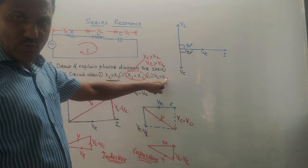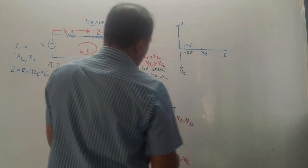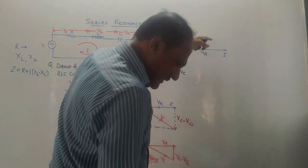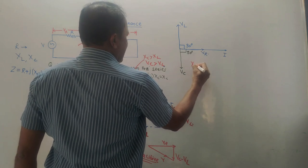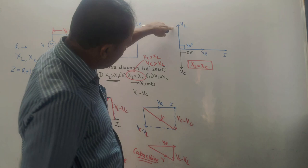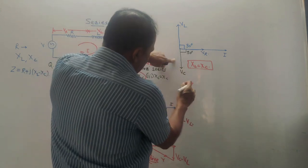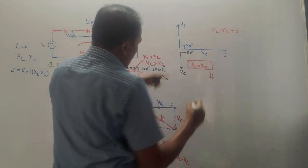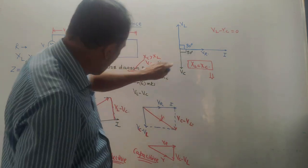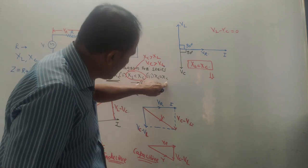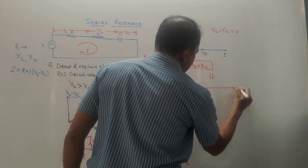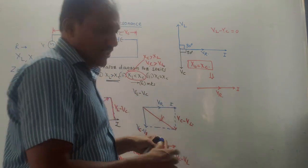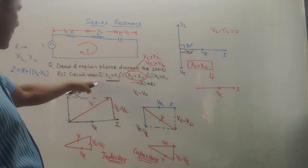Third condition: XL equals XC. When XL and XC are the same, VL and VC will also be equal, and VR will be along the current axis I. Since VL and VC are equal, they cancel out — performing VL minus VC or VC minus VL gives zero. The resultant phasor diagram is simply VR along the current axis. This was the answer to: draw and explain the phasor diagram for a series RLC circuit.